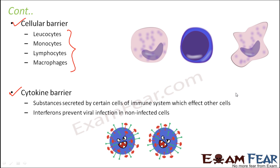All these barriers — whether leukocytes, monocytes, lymphocytes, skin, nasal cavity, or gastrointestinal tract lining — are present in our body by birth, and that is why they all form part of innate immunity.